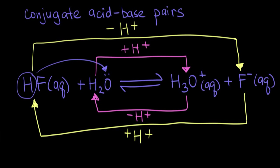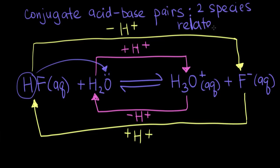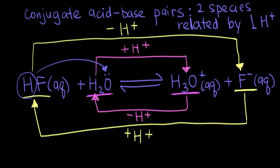In chemistry, we call these species that are related in this way conjugate acid-base pairs. The definition of a conjugate acid-base pair is two species that are related to each other by one H⁺. In this case, HF and F⁻ are a conjugate acid-base pair, and water and H₃O⁺ are also a conjugate acid-base pair.